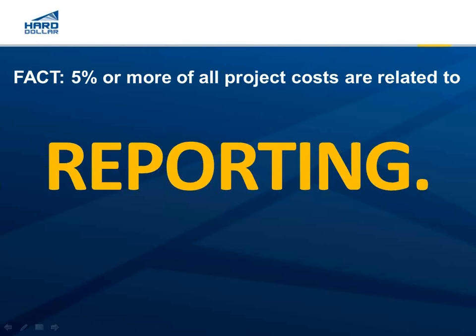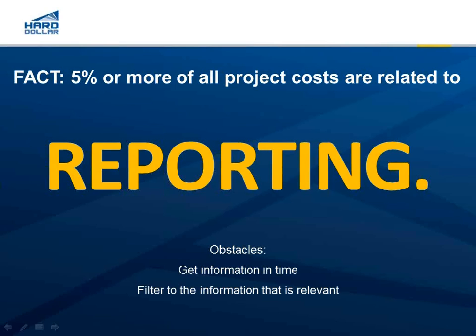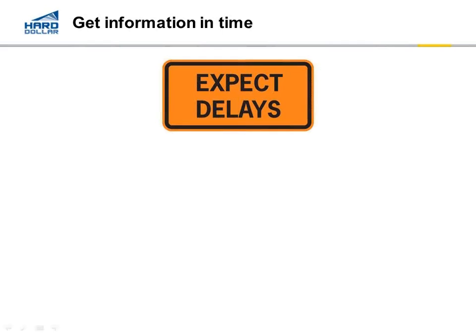Confronting it involves overcoming certain obstacles. Obstacle number one: we need to find a way to get this information into the right people's hands on time — give them the information in time to do something about issues that are happening in the project. Second, being able to filter down to the information that's relevant. Third, get information into the right hands of the right stakeholders.